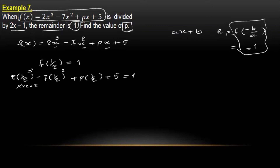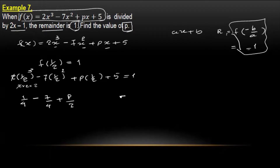So you can see the value equals 1 by 4, minus 7 by 4, plus p by 2, plus 5. This gives minus 5, and minus 5 is equal to 1 minus 4. So this value is equal to 1 by 4.